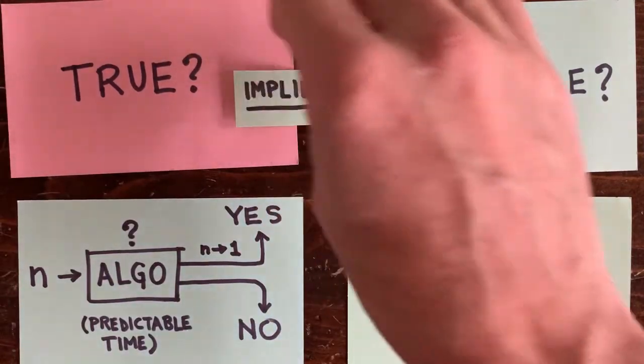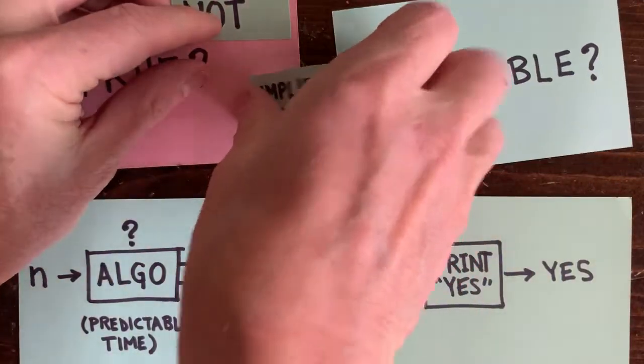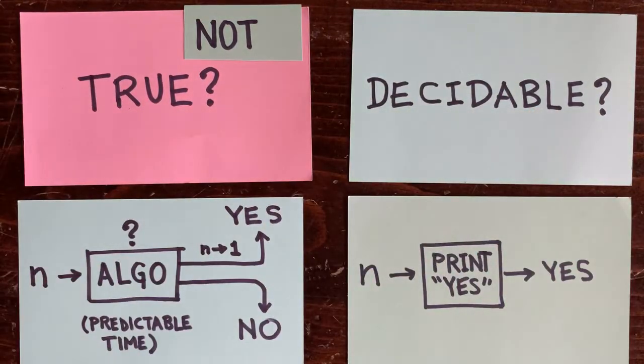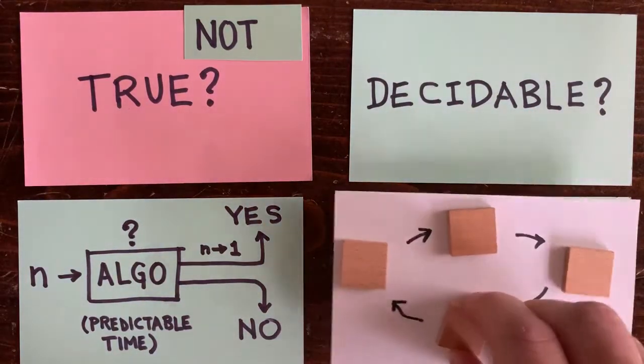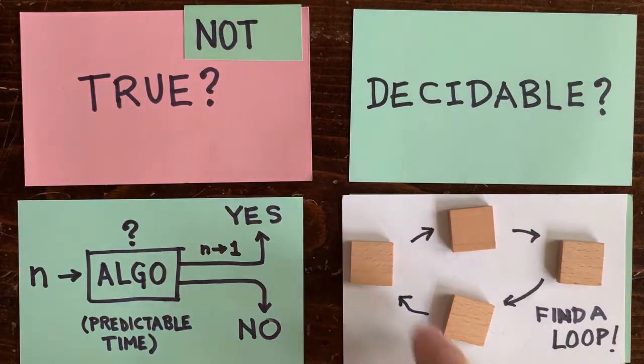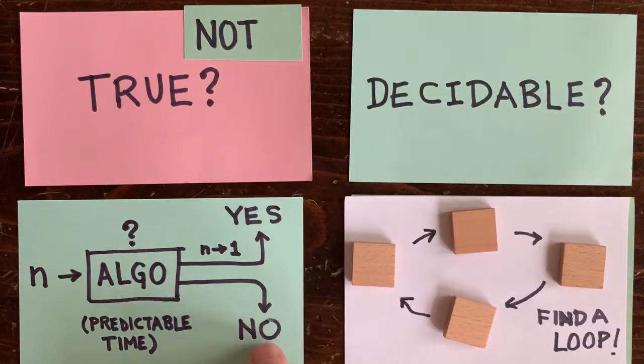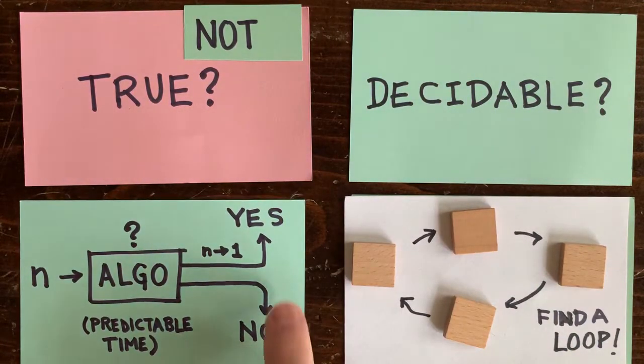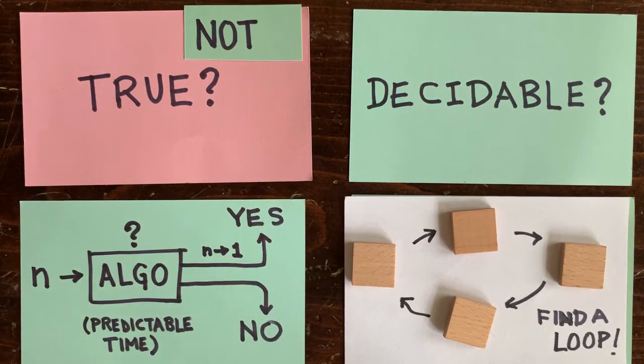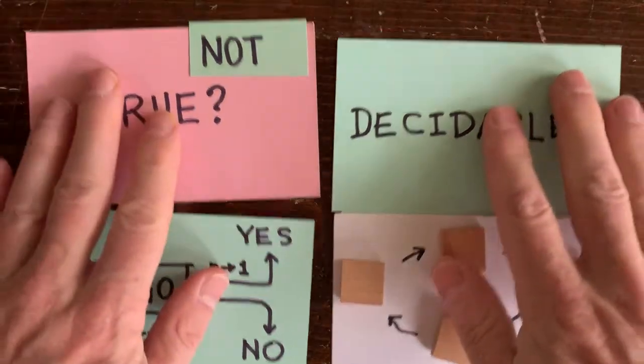For example, there's a counterexample. Then there might be an algorithm that returns whether any n goes to 1. For example, an algorithm could check whether n is a member of some loop. In that case, output no, otherwise output yes. Or maybe there's no algorithm at all. Okay, that's provability and decidability.